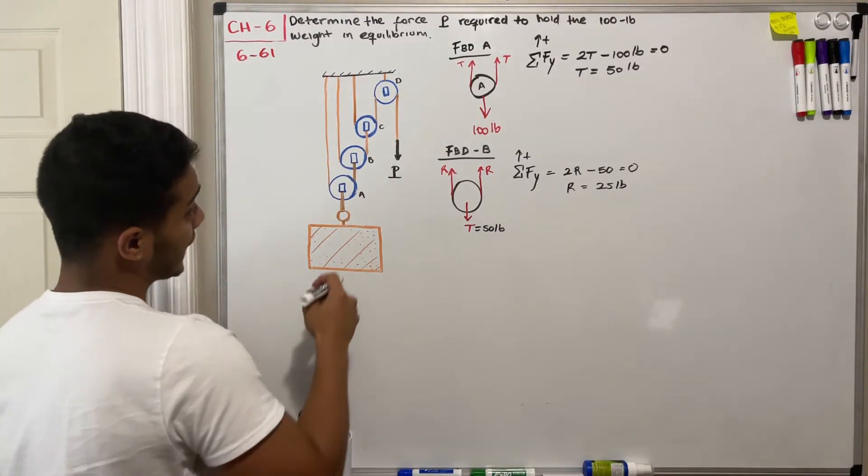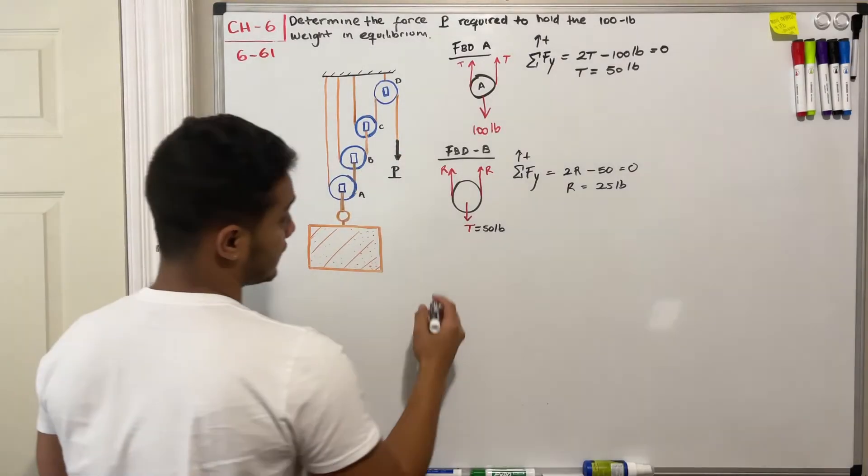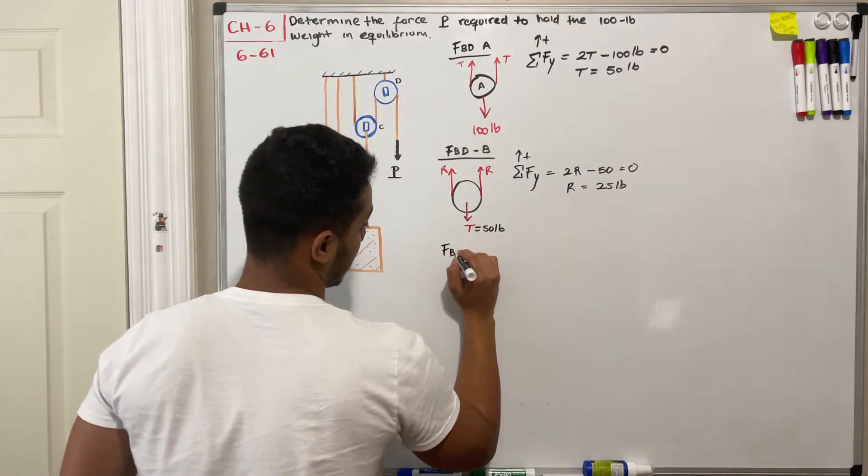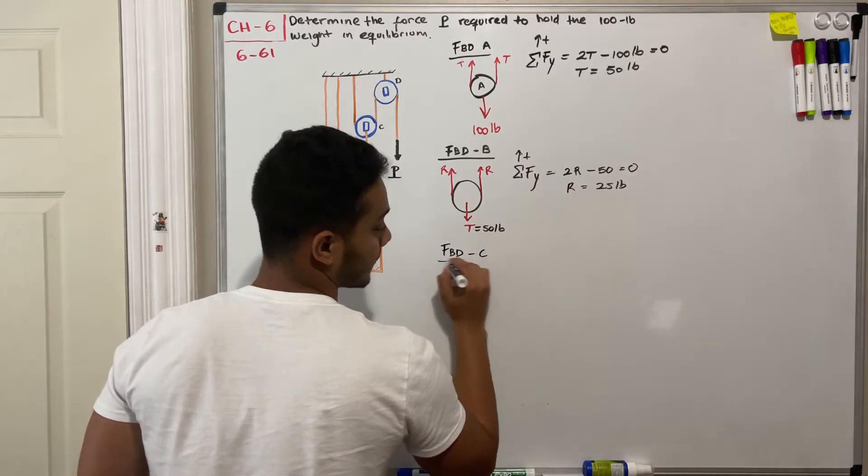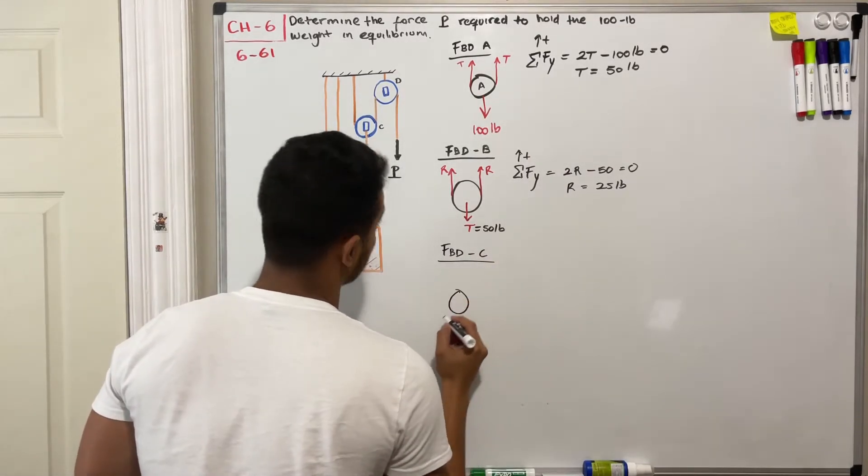The last free body diagram that we have to draw is my pulley C, so free body diagram of my pulley C. What do I have?